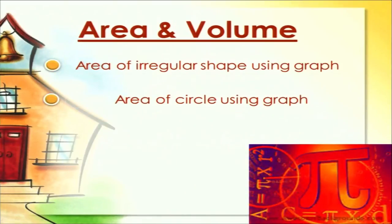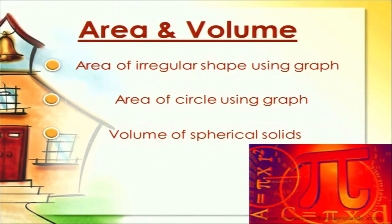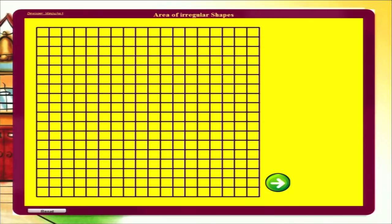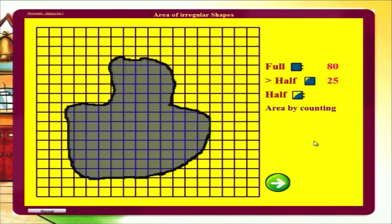Next is area and volume. Area is defined as the amount of surface space an object has, and volume is the measure of space taken up by a solid object. We have illustrated activities to measure the area and volume of regular and irregular polygons and spherical solids, including area of irregular shapes using graph paper, area of a circle using a graph, and volume of spherical solids. In the graph paper activity, an irregular shape is randomly generated. The area is calculated by counting: full squares are counted as full, squares covered more than half are also counted as full, and half-covered squares are divided by 2.